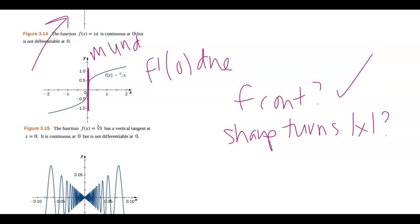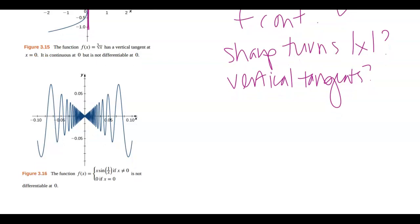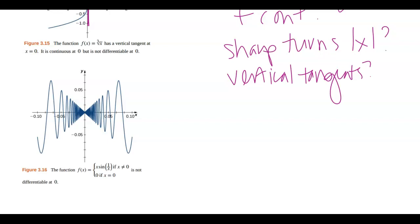Are there any vertical tangents? If so, I'm out. The last check has to do with an oscillating piece here. If you have something that oscillates, it's really hard to know what the tangent line is doing.